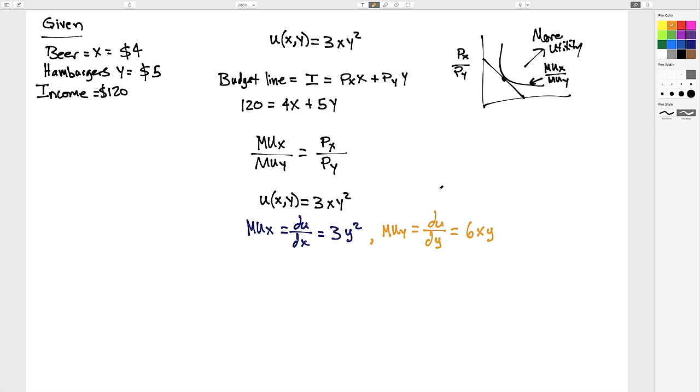And if we combine these two, we get 3Y squared over 6XY, and then we simplify this down. That cancels with that. That turns into a 1. That turns into a 2.